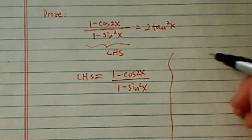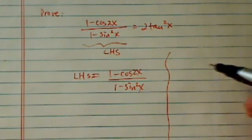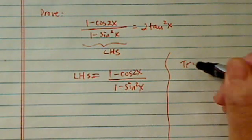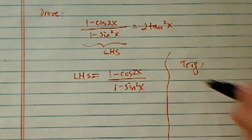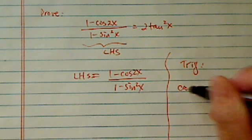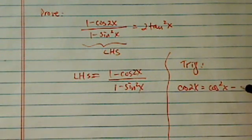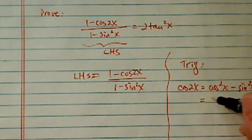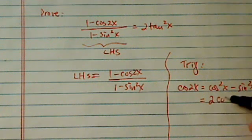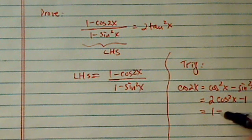There's a couple important identities that's very important for trig students to know. One of them is that cosine of 2x is equal to cosine square x minus sine square x. Now from here there's a couple different forms. This could be equal to 2 cosine square x minus 1, or it could be 1 minus 2 sine square x.